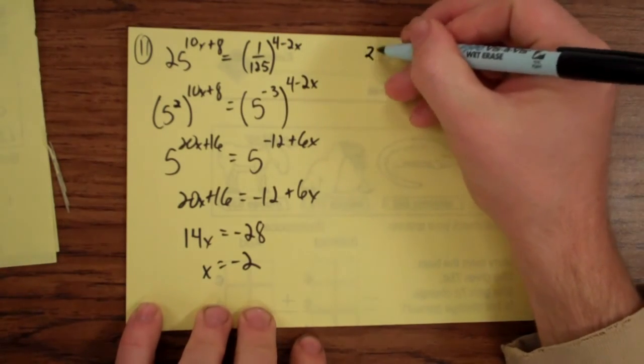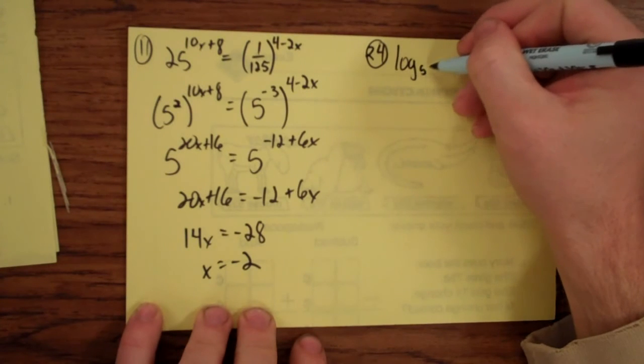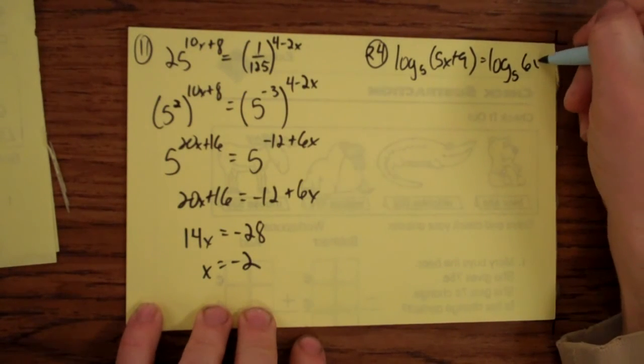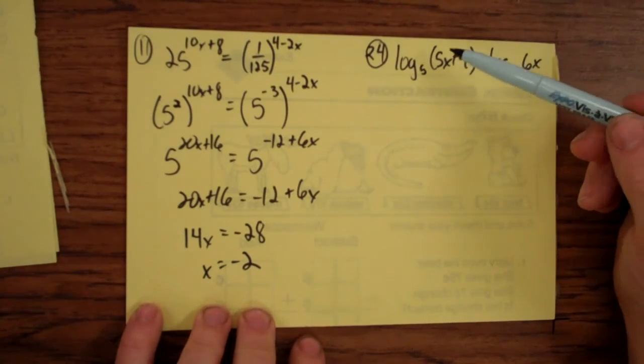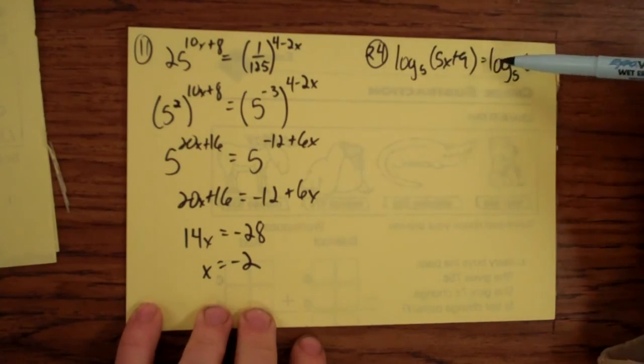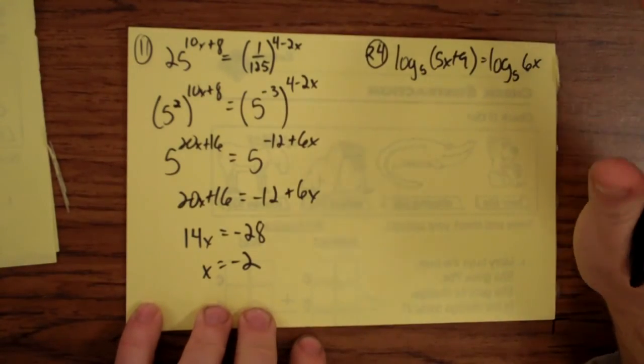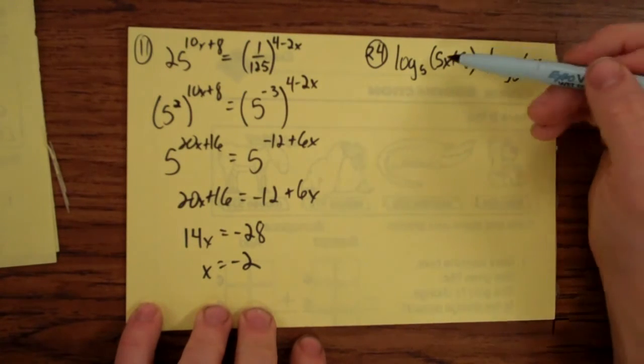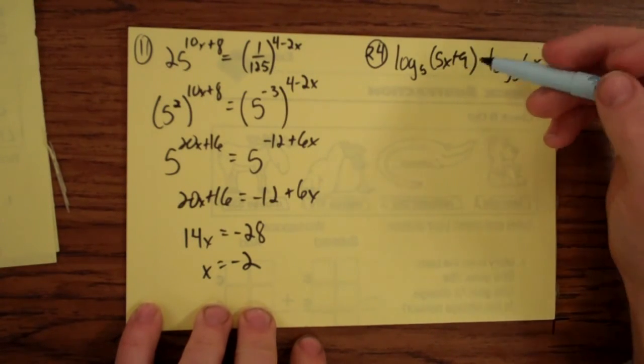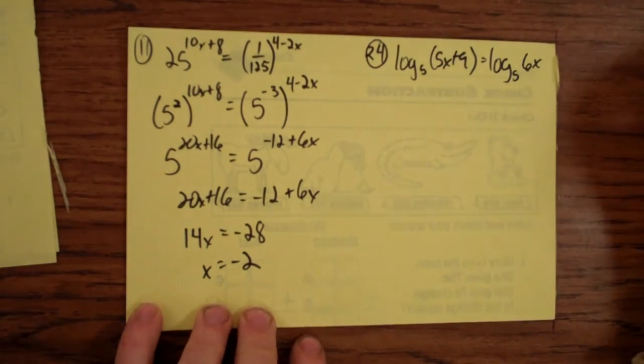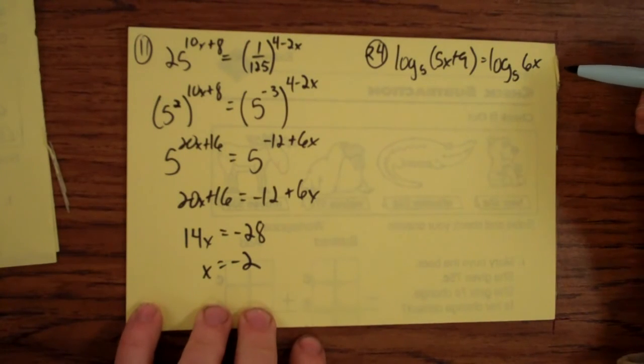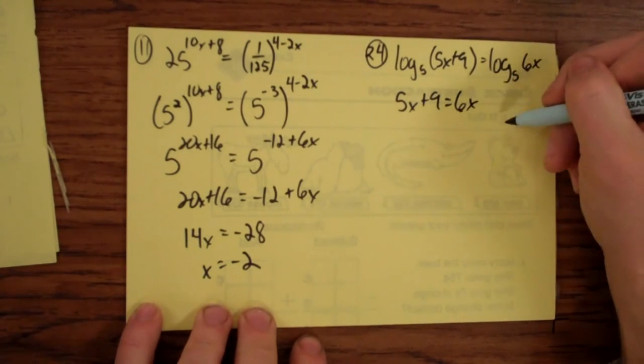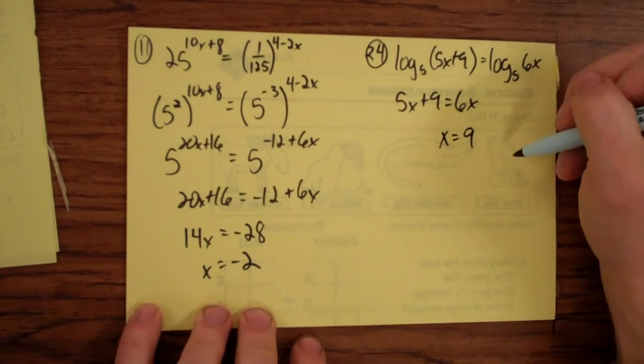So let's start with 24. Log base 5 of 5x plus 9 equals log base 5 of 6x. And remember from the previous video, the moral of the story of these kinds is, first of all, you got a log of something equals a log of something. Nothing else, that's it. And they have the same base. Not only are they both logs, they're log base 5, both of them. And if you want more of an explanation of why I'm about to do this, watch the intro video. So since they have the same base, since it's just logs involved, I'm not adding something else over here, then set this and this equal to each other. They must be the same thing. It's the only thing that makes sense. So, x is equal to 9. Subtract 5x from both sides, there you go.